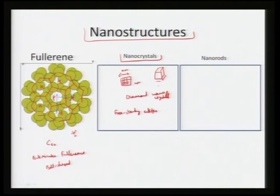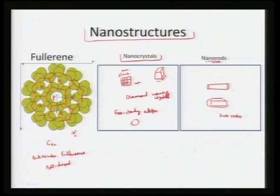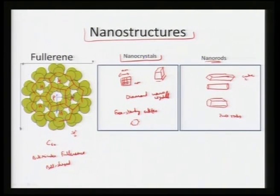A nanorod is associated with the unit cell — if the unit cell is hexagonal, it will grow as a hexagonal nanorod. Nanorods have a rod shape and can have a circular, hexagonal, square, or cubic cross section, but they are filled units. Examples include zinc oxide nanorods. In nanorods, two of the dimensions are in the nanometer length scale while the length can be a couple of micrometers or more.